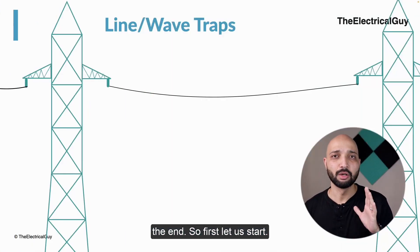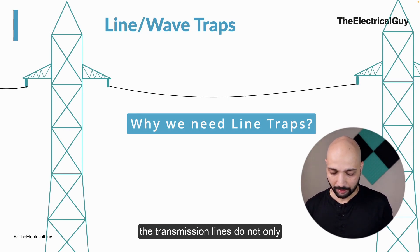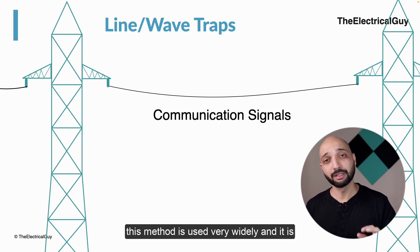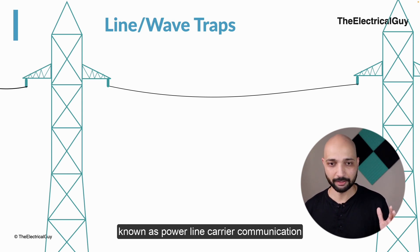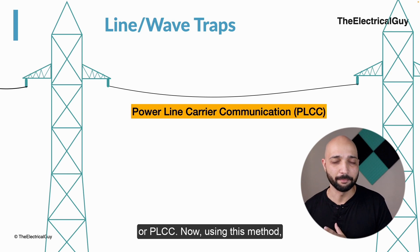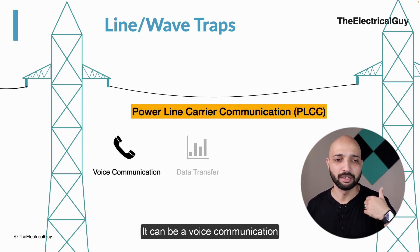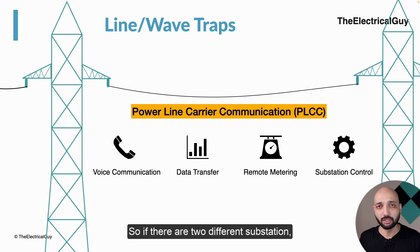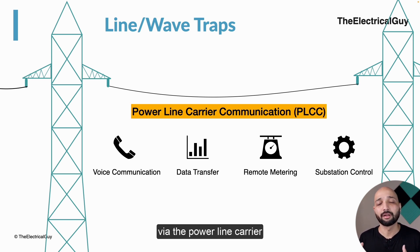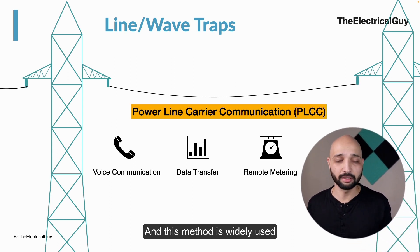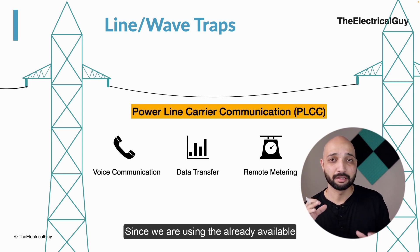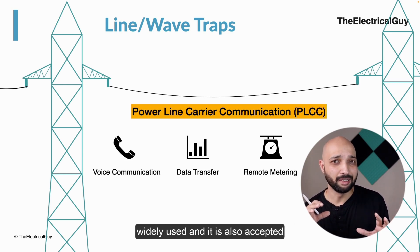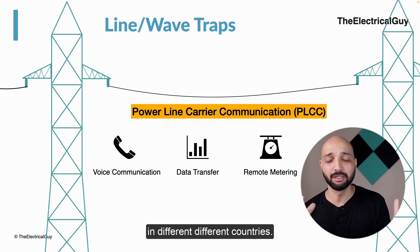Transmission lines are not only used to deliver power but also to deliver communication signals. This method is known as Power Line Carrier Communication, or PLCC. Using this method, different signals can be transmitted: voice communication, data transfer, remote metering, and control between substations. This method is widely used because it is economical — since we are using the already available transmission network, we save a lot of money.